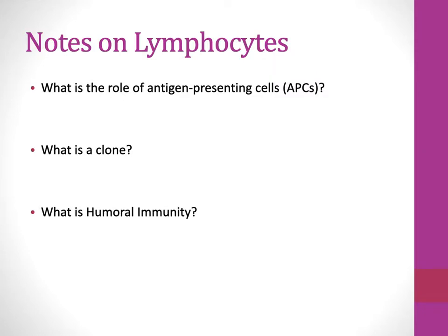With our lymphocytes, you should know the role of antigen-presenting cells (APCs). It's right in the name — they present antigen. These are phagocytes that have engulfed pathogens, digested them, and now present them on their MHC molecules — surface receptors — to other immune cells. When T cells and B cells make copies of themselves, that's called a clone: same genetic information, but they differentiate and may have different functions. You should also know that humoral immunity refers to antibodies present in the fluids of our body.